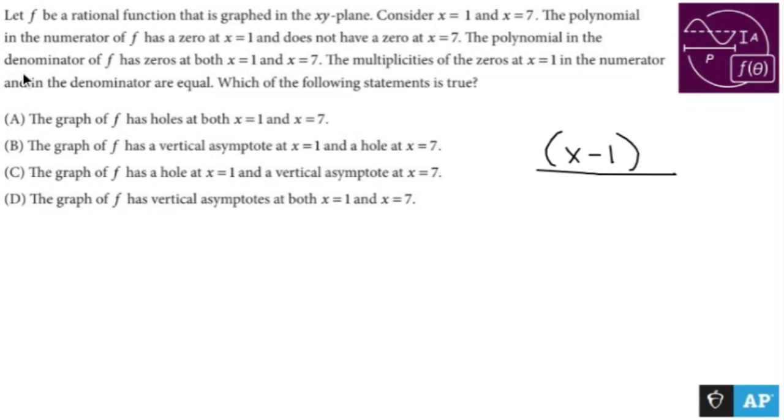The polynomial in the denominator of f has zeros at both x equals 1, so x minus 1, and x equals 7, so x minus 7.